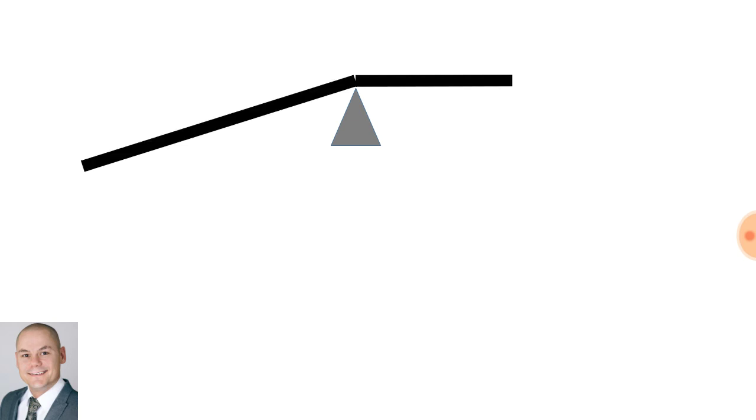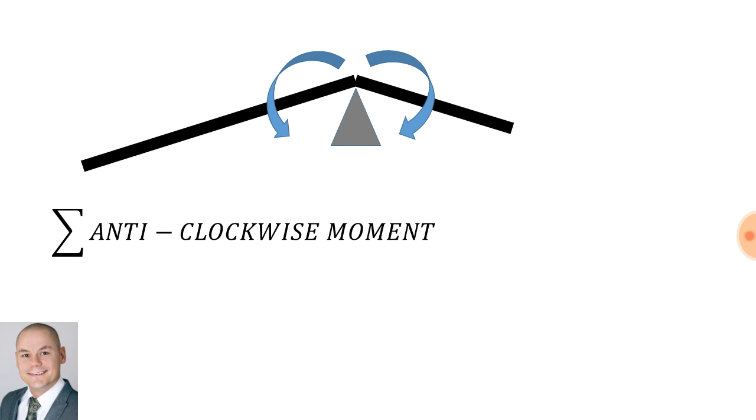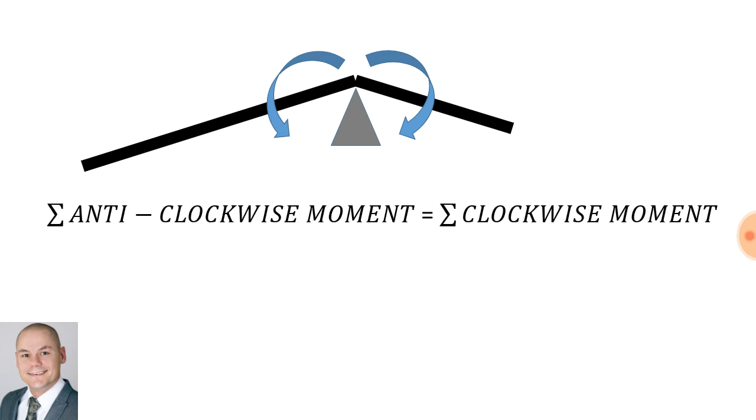At our hinging point, we can see how this part of the beam moves in an anti-clockwise direction, and therefore it is the sum of the anti-clockwise moment. The beam in this direction is moving in a clockwise direction and therefore is known as a clockwise moment.